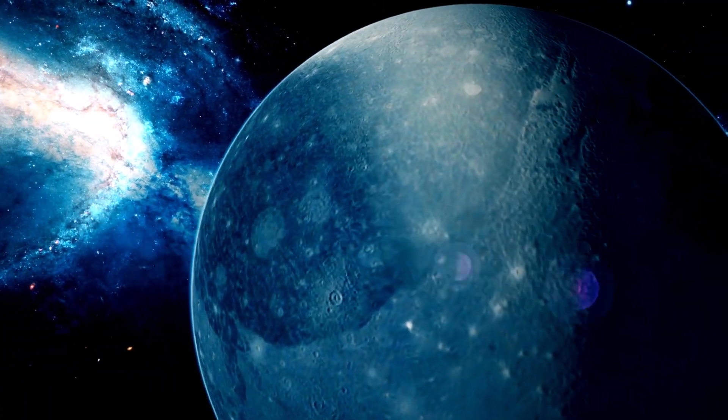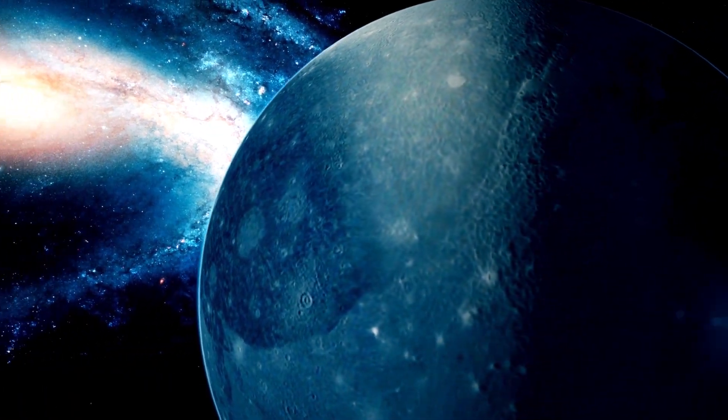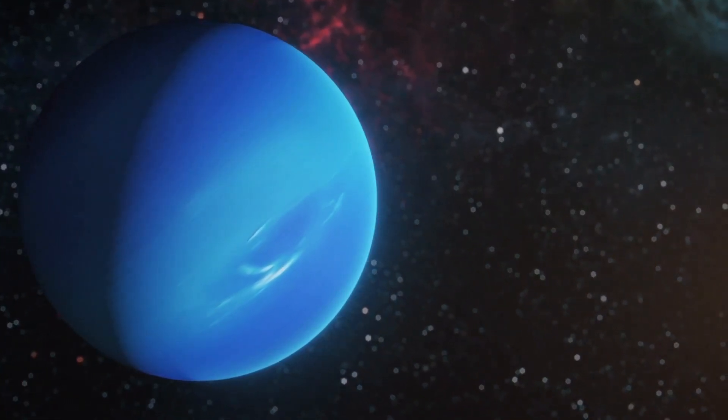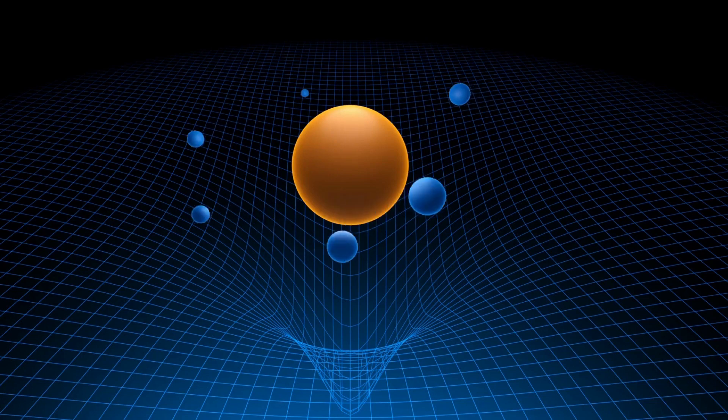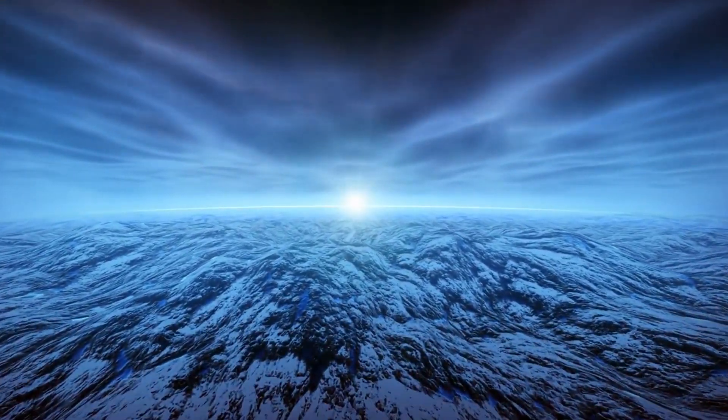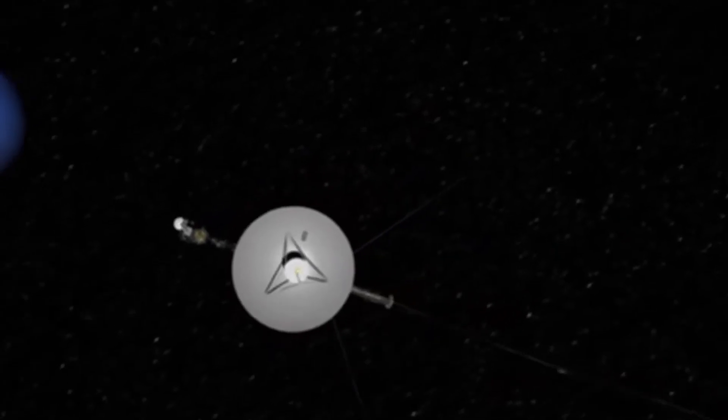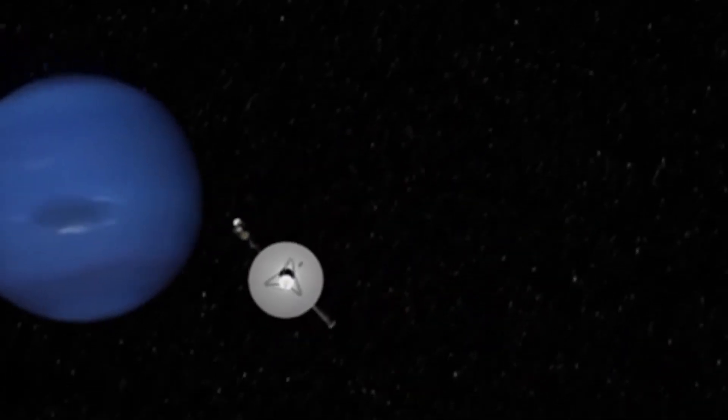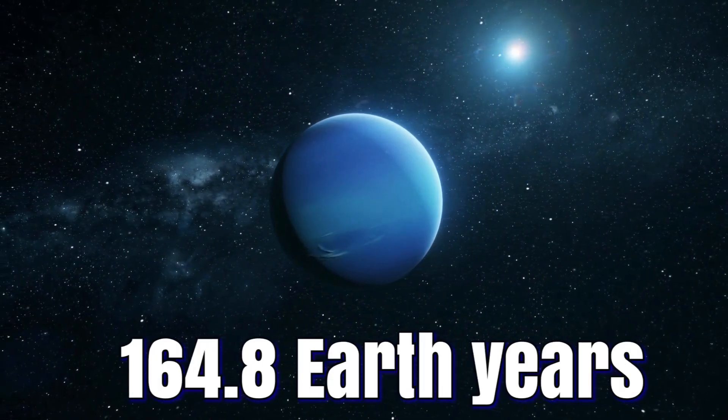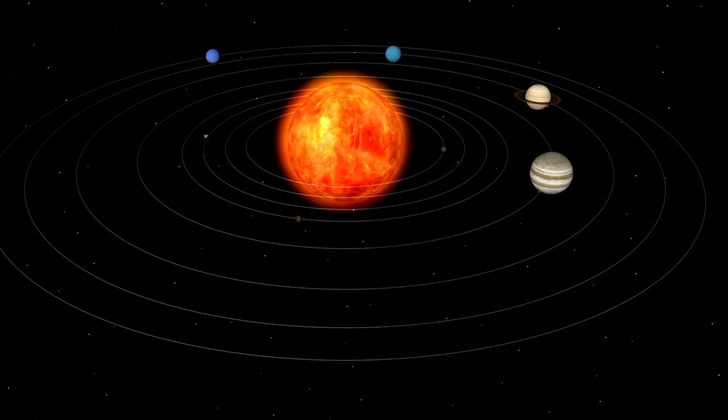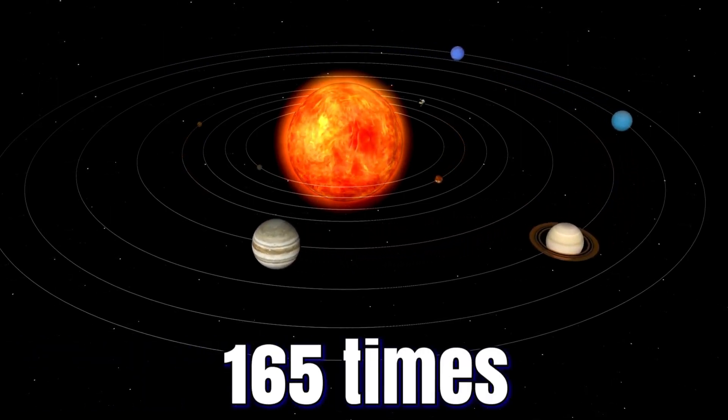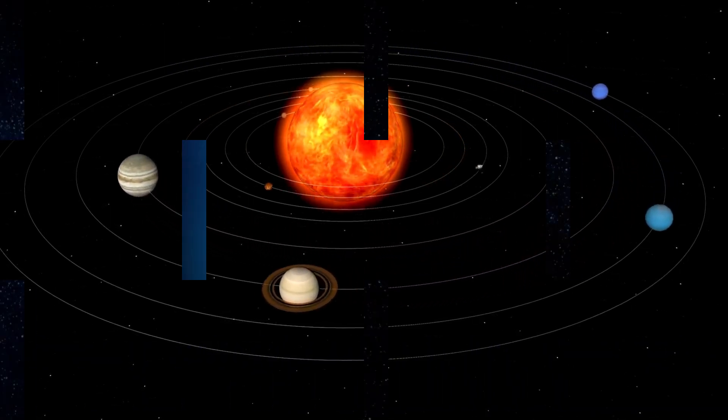Despite being smaller than its nearest gas giant neighbor, Uranus, Neptune actually has more mass due to its incredible density. This means that its gravity is so strong that it squeezes the planet's atmosphere, allowing it to fit more mass into a smaller space. It takes Neptune approximately 164.8 Earth years to orbit the Sun, which means that one Neptunian year is nearly 165 times longer than an Earth year.